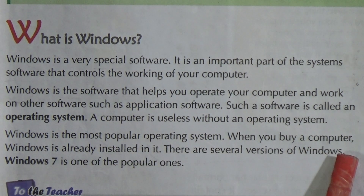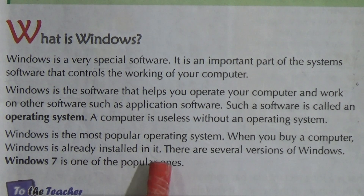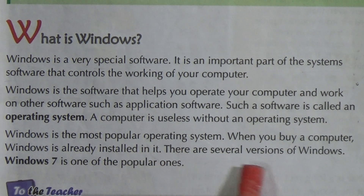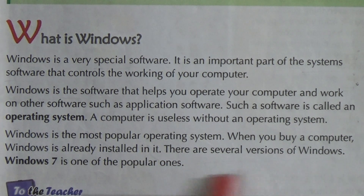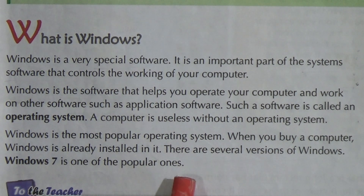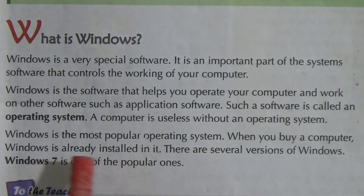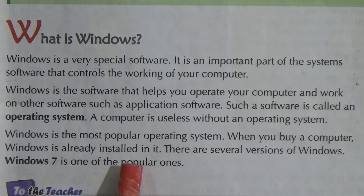When you buy a computer, Windows is already installed in it. There are several versions of Windows, and Windows 7 is one of the popular ones. So when you buy a computer, there is already an operating system there so you can use it.